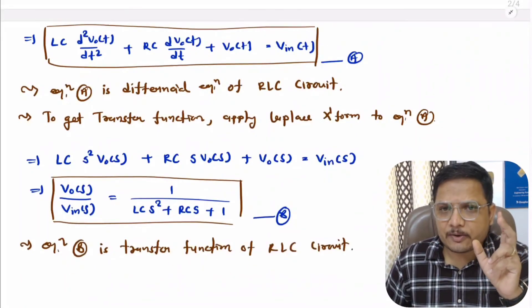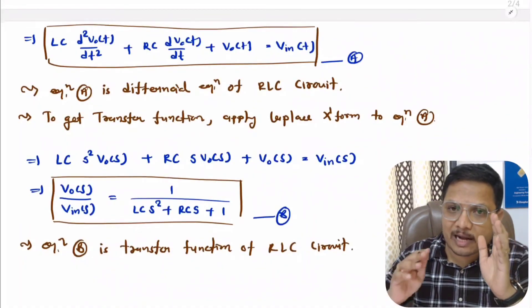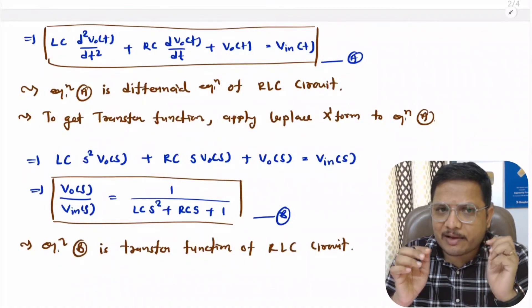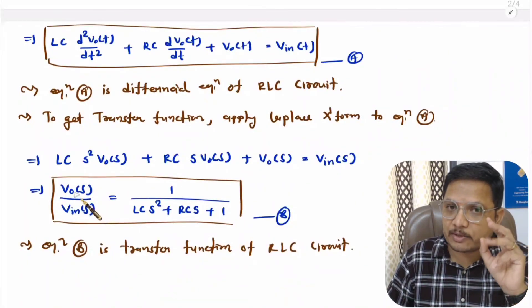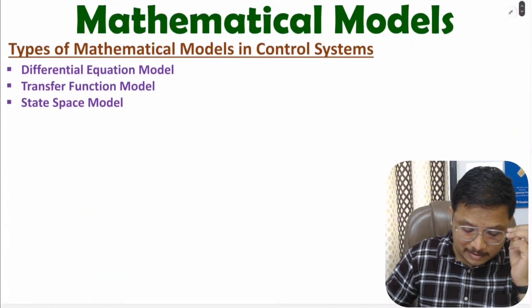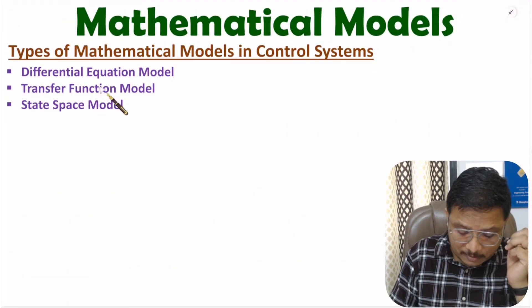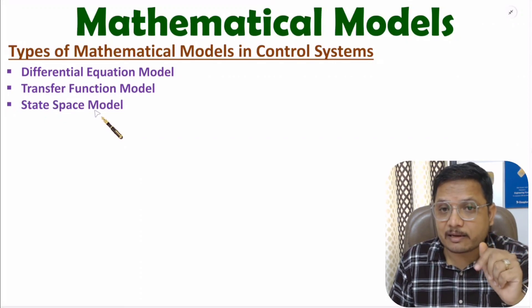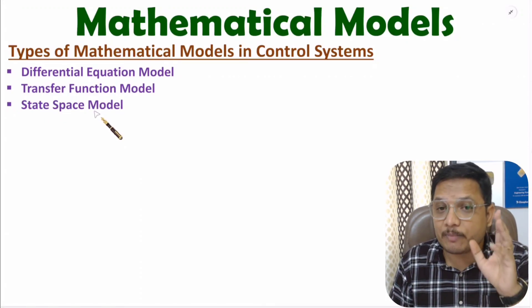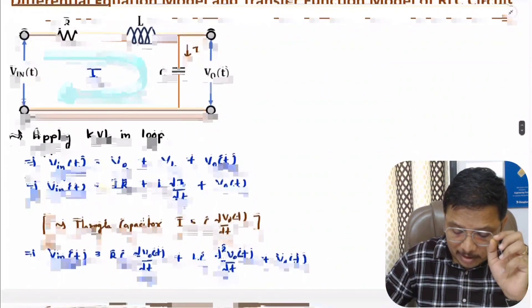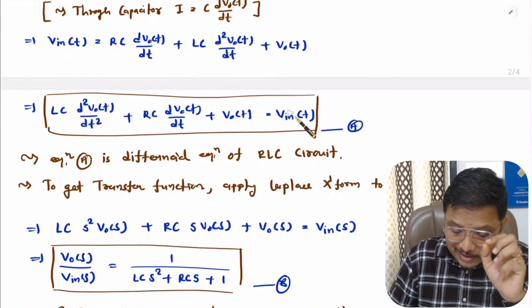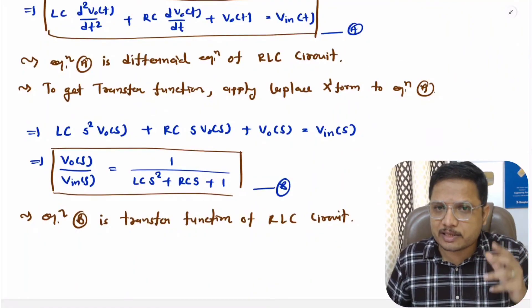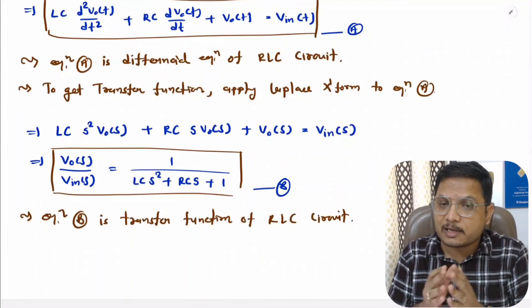In my earlier videos I explained how to identify the transfer function using block diagram reduction and signal flow graphs. Here I have given one example showing how to derive the transfer function. One should know there are three types of modeling for mechanical systems: differential equation, transfer function, and state space. In the next chapter I will explain the state space model, and in this chapter I will explain mathematical modeling of mechanical systems in differential equation and transfer function form. Thank you so much for watching this video.